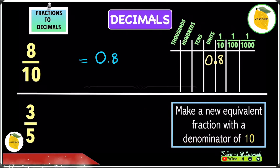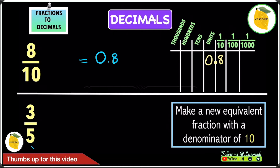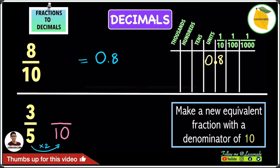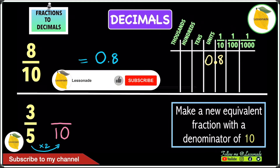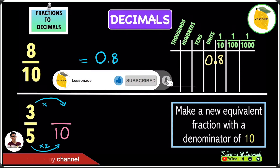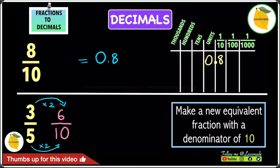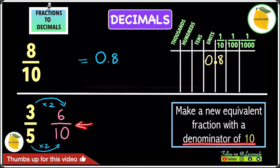The denominator in this fraction is 5. To change 5 into 10 we multiply by 2, because 5 times 2 gives us 10. Whatever you do to the denominator, you do to the numerator — so we multiply the 3 also by 2. And 3 times 2 gives you 6, so we get 6 over 10 as the new equivalent fraction.